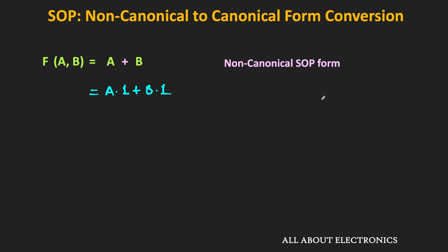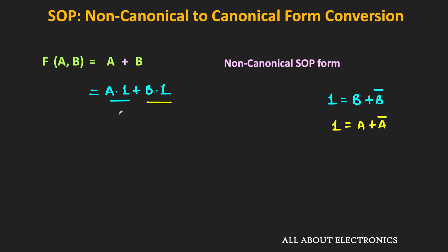In the first term, we can write the 1 as (B + B̄), because we know that B + B̄ = 1. That means in the first term we can replace 1 with (B + B̄). Similarly, in the second term we can replace 1 with (A + Ā), because the variable A is missing. So we can write the expression as A·(B + B̄) plus B·(A + Ā).